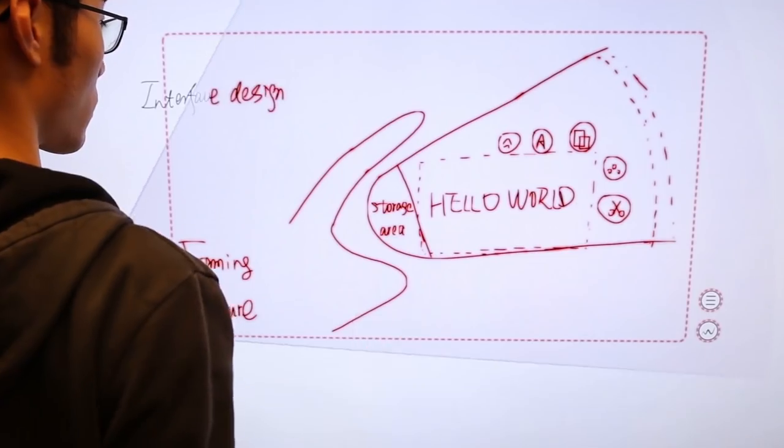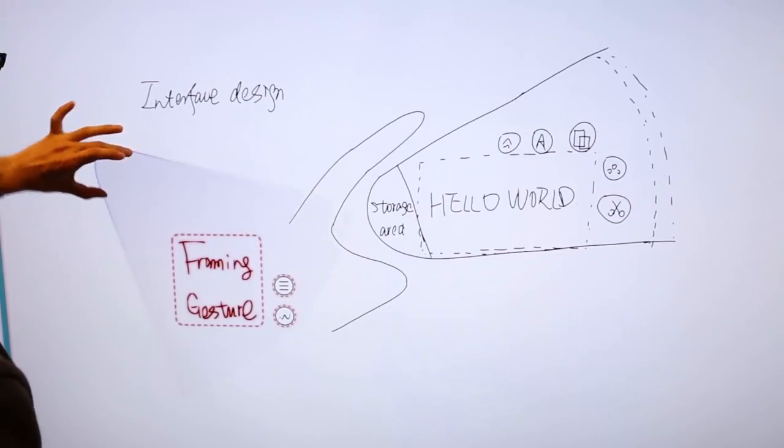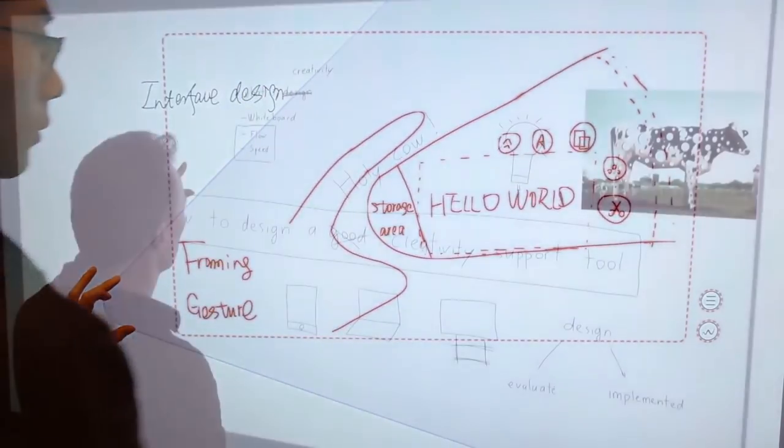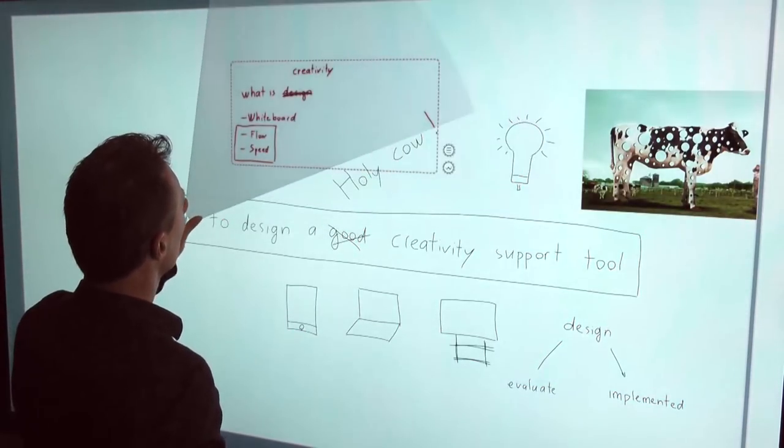To indicate scope, the content creator just frames part of the canvas with their non-preferred hand. This evokes the zoom catcher, which illuminates an area for selection in an extremely lightweight manner.